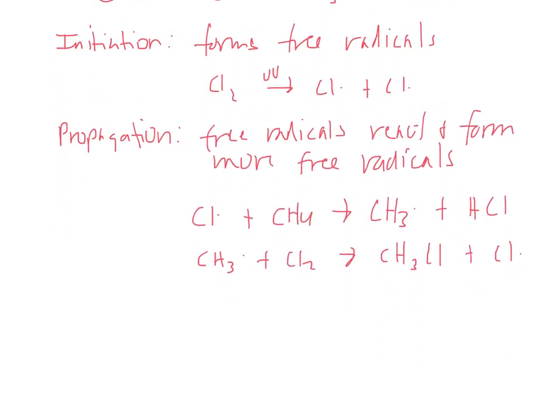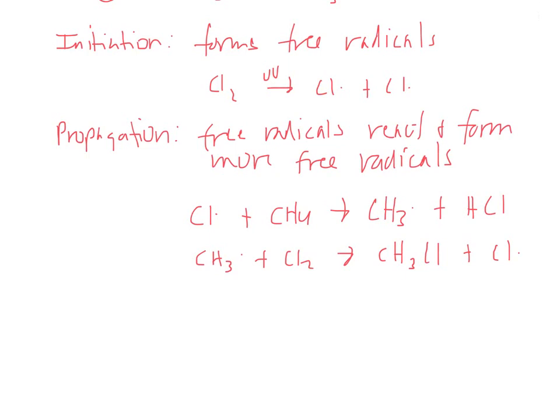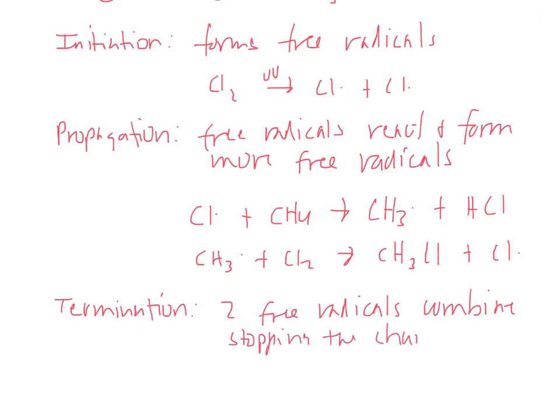And then the final step is termination. And termination is two free radicals combined, which stops the chain reaction from going. So I'll include that stopping the chain reaction, at least for two free radicals. And an example of that is when a Cl and a Cl find each other, they will form Cl2.